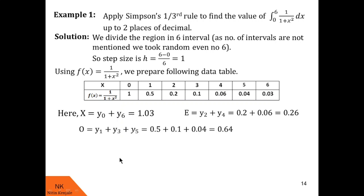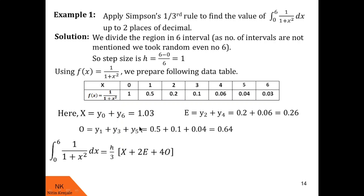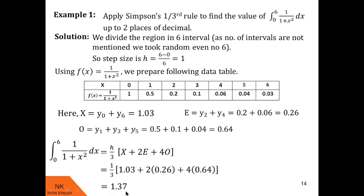Now let us substitute these values into Simpson's one-third rule. The value of this definite integral is h/3 × (X + 2E + 4O). Here h = 1, X = 1.03, E = 0.26, and O = 0.64. After substituting and calculating, we get the value of this integral to be 1.37. I hope you understood this example.